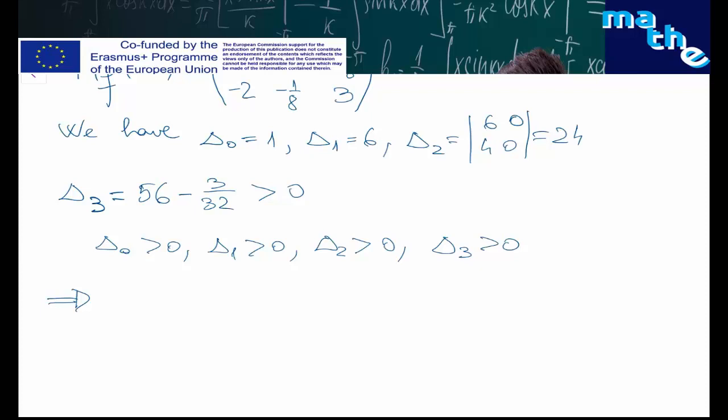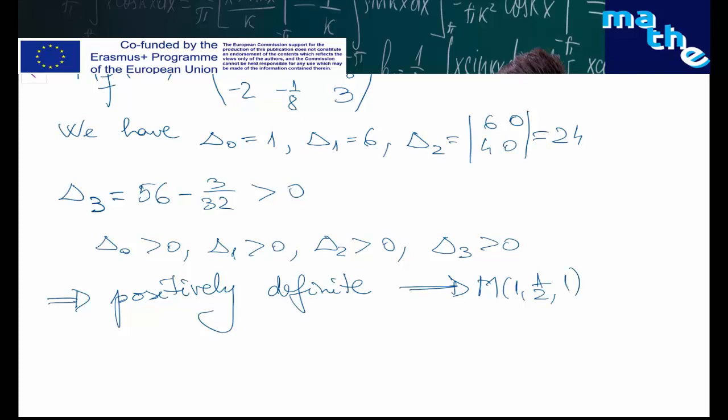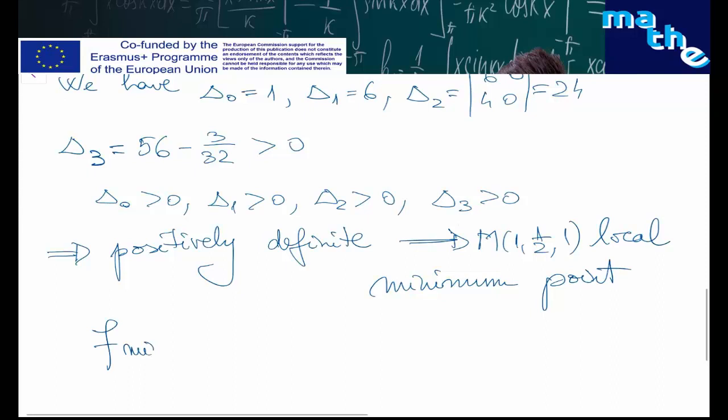Consequently, the Hessian matrix is positive definite, and therefore the critical point m = (1, 1/2, 1) is a local minimum point. The minimum value of the function f is f(m) = 1/2 + 1/2 + 1 + 2 = 4.